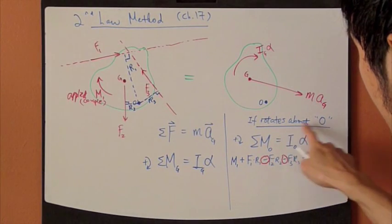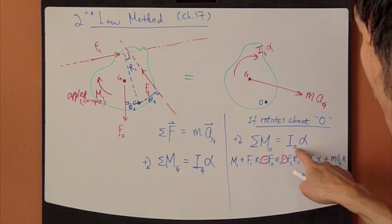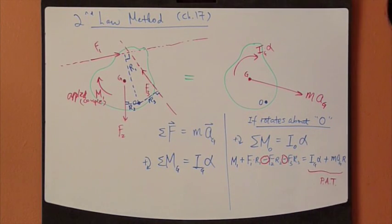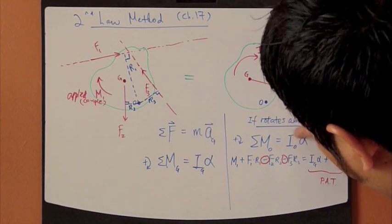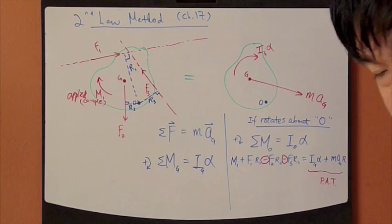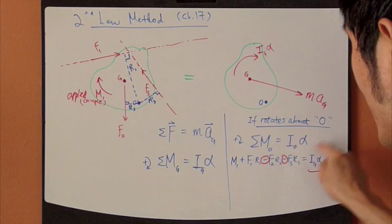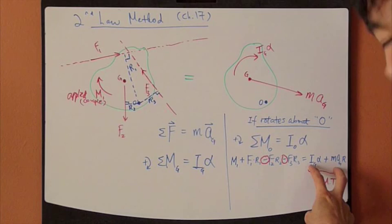Equals, right hand side, is moment of inertia about point O times alpha. This I_O, from the discussion before, using parallel axis theorem, you can actually re-express this term in two terms.